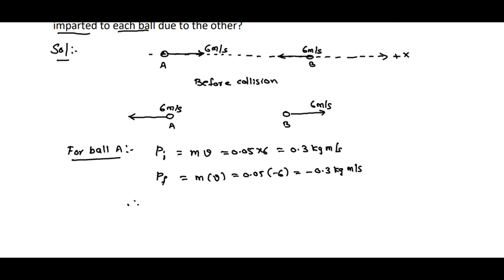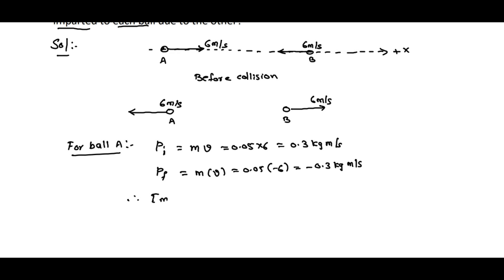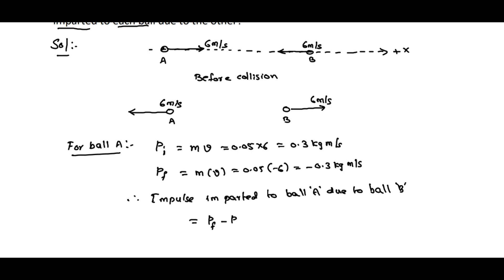Therefore, the impulse imparted to ball A due to ball B is the change in momentum: final momentum minus initial momentum, that is minus 0.3 minus 0.3, which equals minus 0.6 kg·m/s. This means the impulse acting on ball A due to ball B is towards the left, i.e., along the negative x-axis.